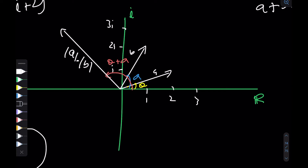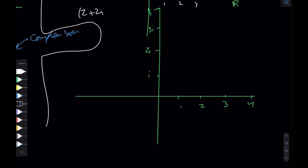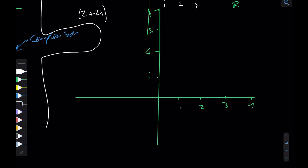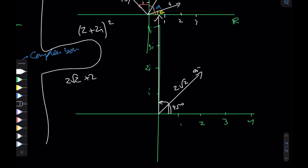To give an example: take the number two plus two i, which is a vector at 45 degrees with magnitude equal to the square root of two squared plus two squared — that's the square root of eight, which is two root two. If I square it, the angle becomes 45 plus 45 equals 90 degrees, and the magnitude becomes two root two times two root two, which is four root two. So the resultant vector points straight up at 90 degrees with magnitude four root two.